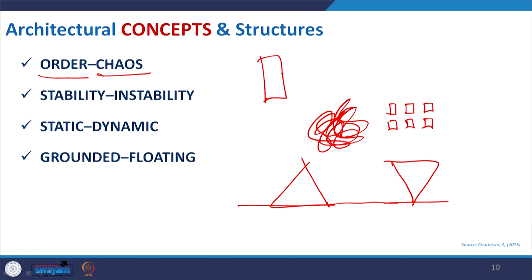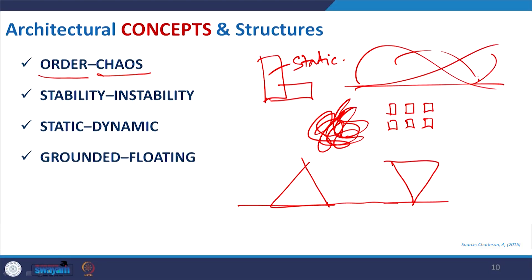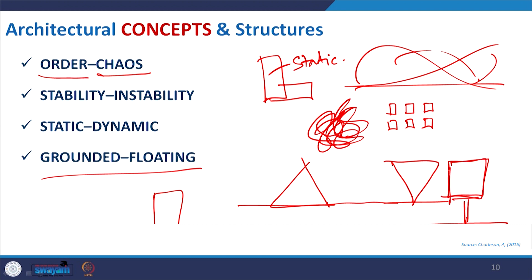Dynamic relates to flow which will change or give a sense of motion when you look into the building, with some curvature and other elements. Grounded means it has a feeling of being anchored to the ground, whereas floating means it seems to be floating — though it is not the real case. Visually, a building that has a heavier mass standing on a very narrow structural element below creates that sense of floating. This is the overall idea of these four concept pairs.